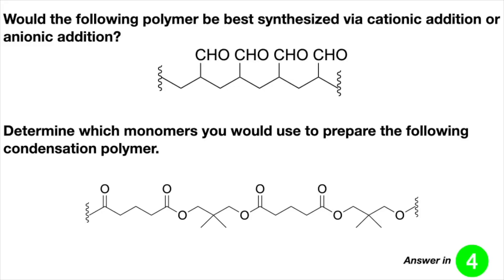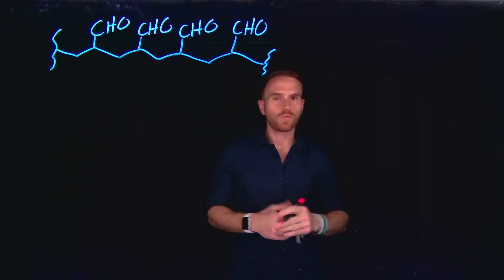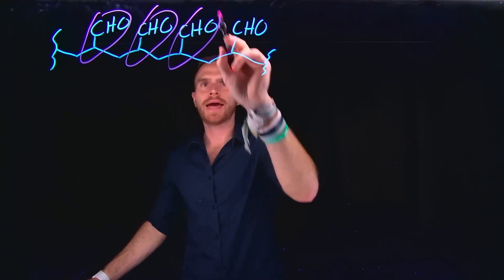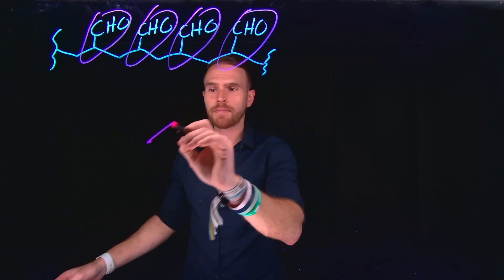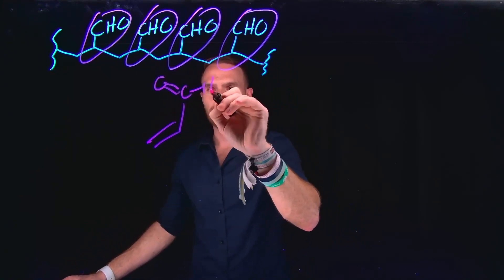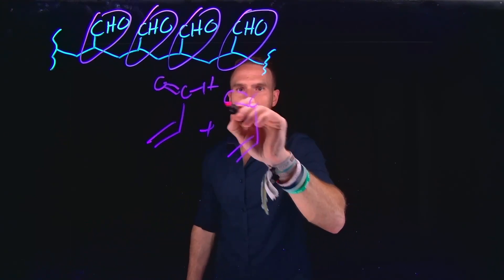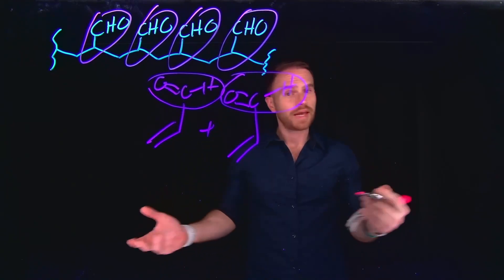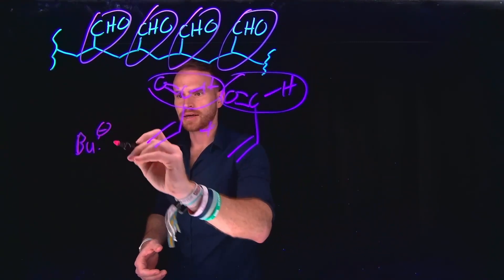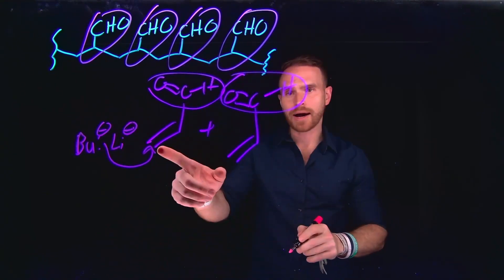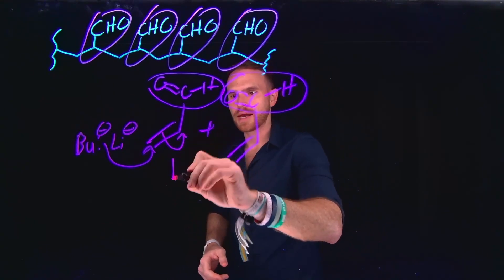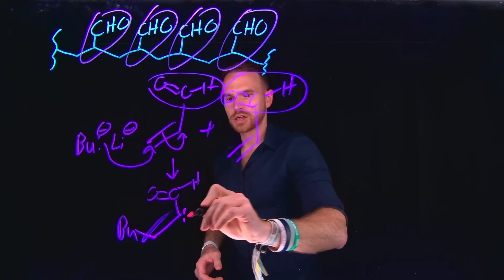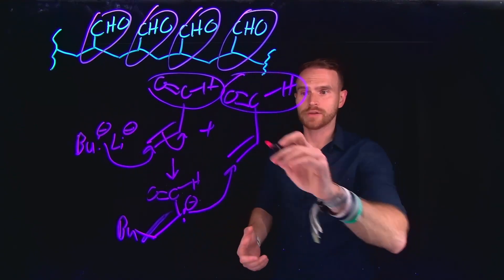Now let's try some practice problems. Pause the video, try these problems independently, and then resume to check my solutions. When distinguishing between cationic and anionic polymerization, it's helpful to identify the substituents on the different monomers. In this case, I see that they are all aldehydes, which are electron-withdrawing groups. This leads me to believe this is likely an anionic polymerization. In fact, the mechanism would proceed through the addition of something like butyllithium, which attacks at the pi location on the terminal alkene, generating a brand new carbanion species with the added butyl group, which can undergo further attack at the pi electrons of the other monomers.